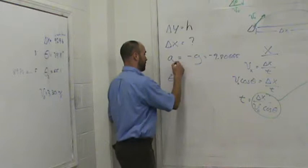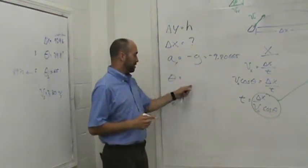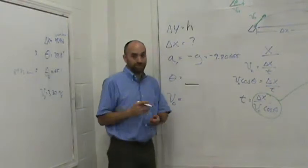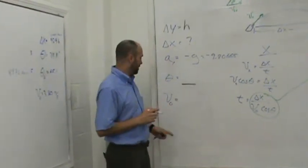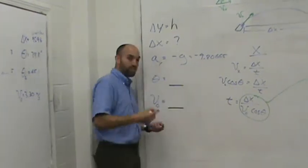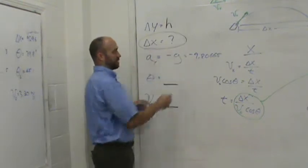The acceleration in the y direction is still negative g, and theta you've measured. Depends on how high you've stacked your books and the angle of your cannon. And the initial velocity you measured in part a, so you know all of this. The only thing we don't know is delta x.